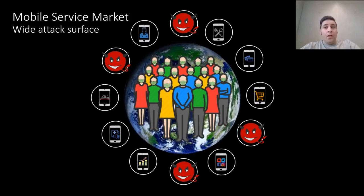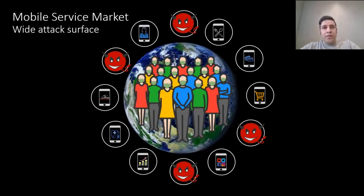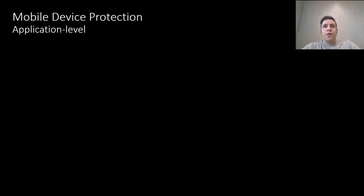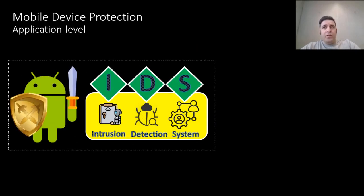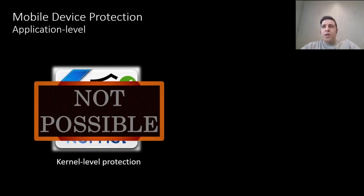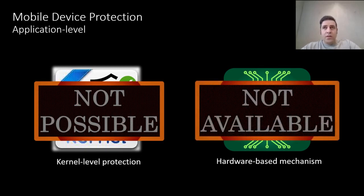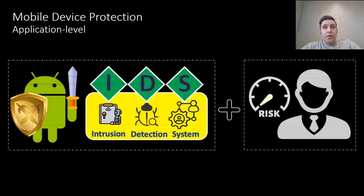Therefore, mobile service providers are not only concerned with the security of their own online services but also need to consider the challenging operating environments of their applications. For protection, service providers often deploy application-level defense strategies such as application hardening and intrusion detection in combination with risk management. Note that OS vendors typically do not provide the possibility to integrate kernel-level protection mechanisms in the applications. Moreover, hardware-based security mechanisms are either not available on all devices or mainly used by platform vendors for their own purpose and not accessible to third parties. Therefore, application-level protection often remains the only available option to service providers, and such protection is limited and cannot fully resist against threats like kernel-level exploits.